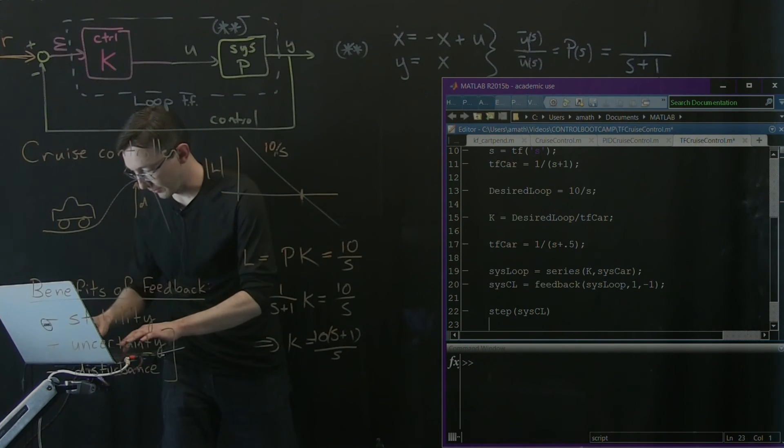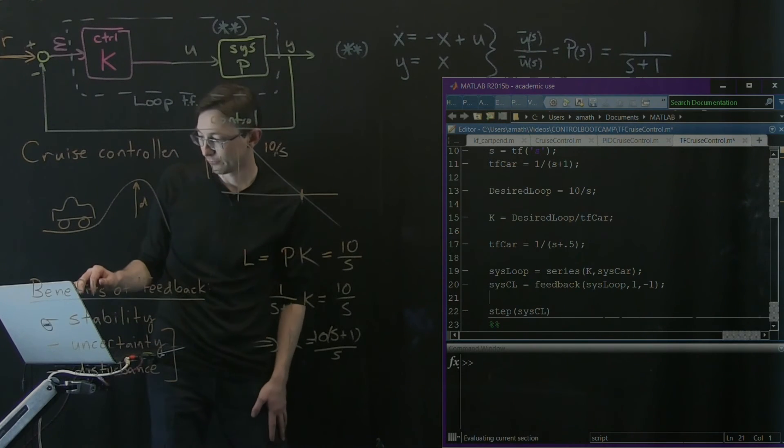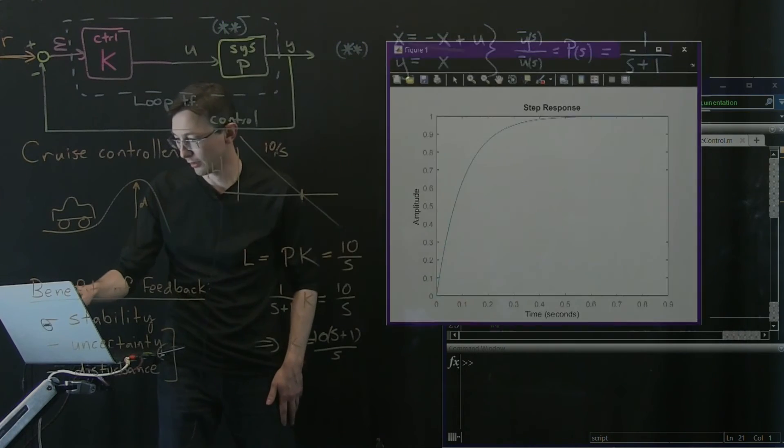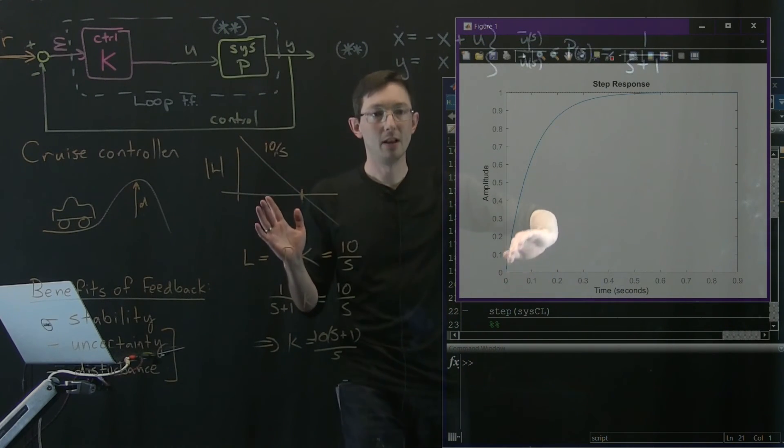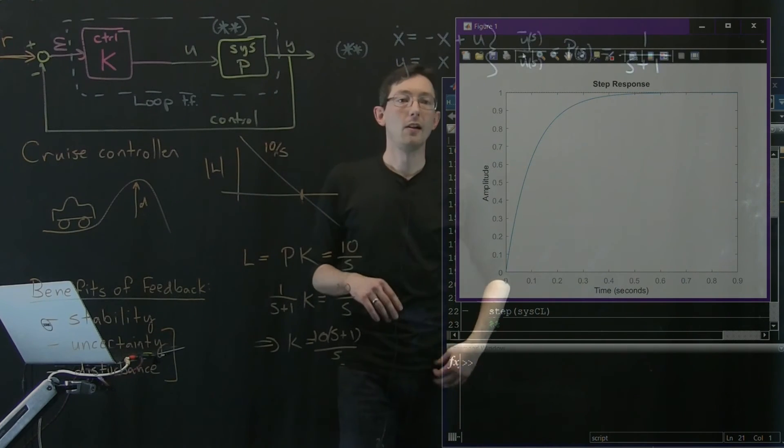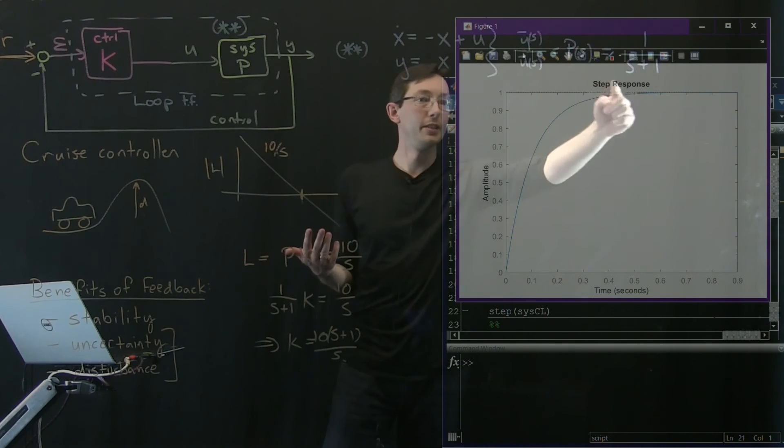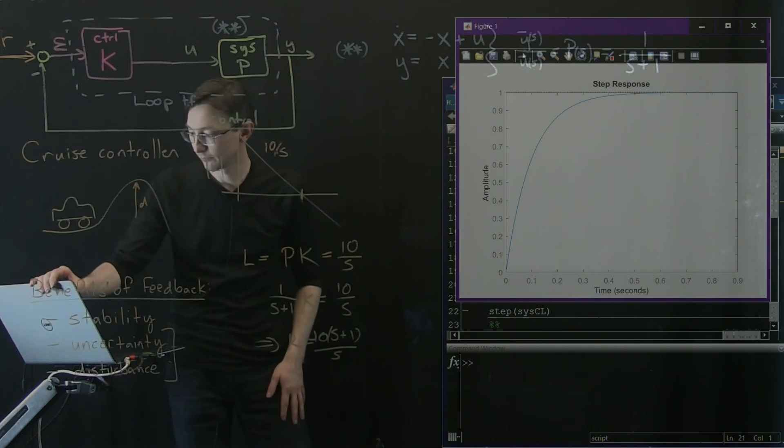And let's see what that looks like. I'm going to actually end it here so I don't plot the other stuff. It's running. Interesting. So it doesn't blow up. It's not unstable and it goes to a good steady state value. But it's a little bit slower because the car dynamics are slower because this is actually a different transfer function than we thought it was.